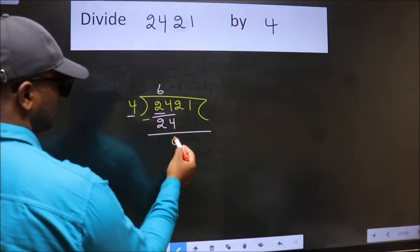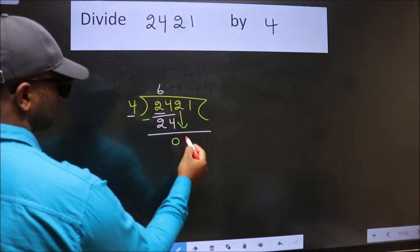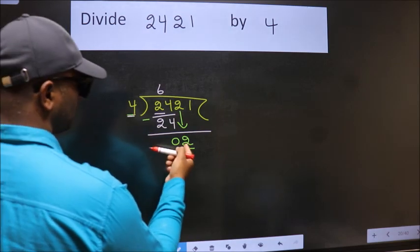After this, bring down the next number, so 2 comes down. Now here we have 2. Since 2 is smaller than 4...